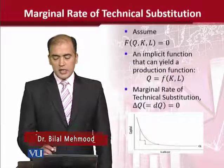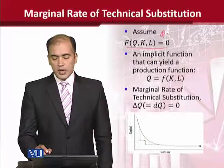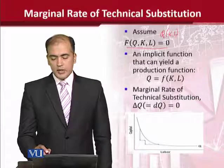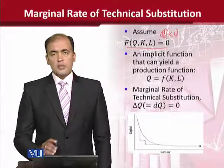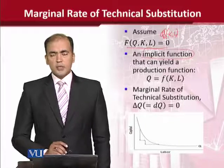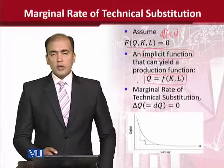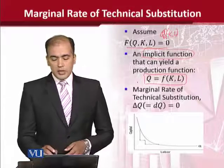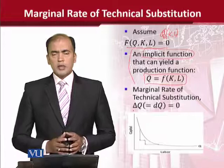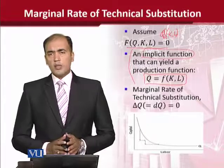We are assuming that we have a production function which could have been written in explicit form. However, we transformed it and wrote it in an implicit functional form, which was actually the original form of it. Using this implicit functional form, we can derive the results of the MRTS — that is, the slope of the isoquant.